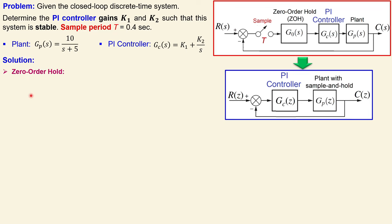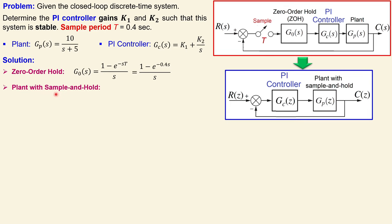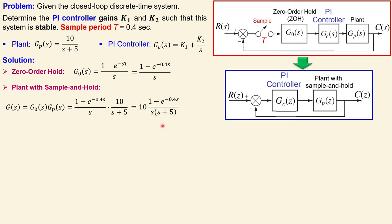Let's start with the zero order hold, which is also a transfer function in the s-domain given by (1 - e^(-sT))/s, with sampling period T = 0.4 seconds. We know that the plant with the sample and hold operation can be written as 10 over s plus 5, times the zero order hold operation. We can combine everything to determine the discrete time version of our plant.